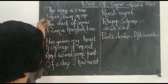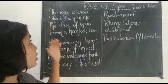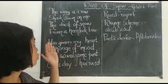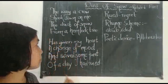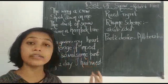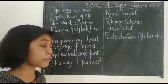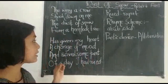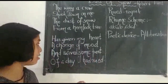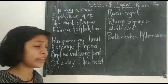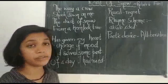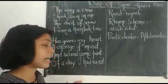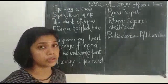So the poem goes like this: 'The way a crow shook down on me the dust of snow from a hemlock tree has given my heart a change of mood and saved some part of a day I had rued.'